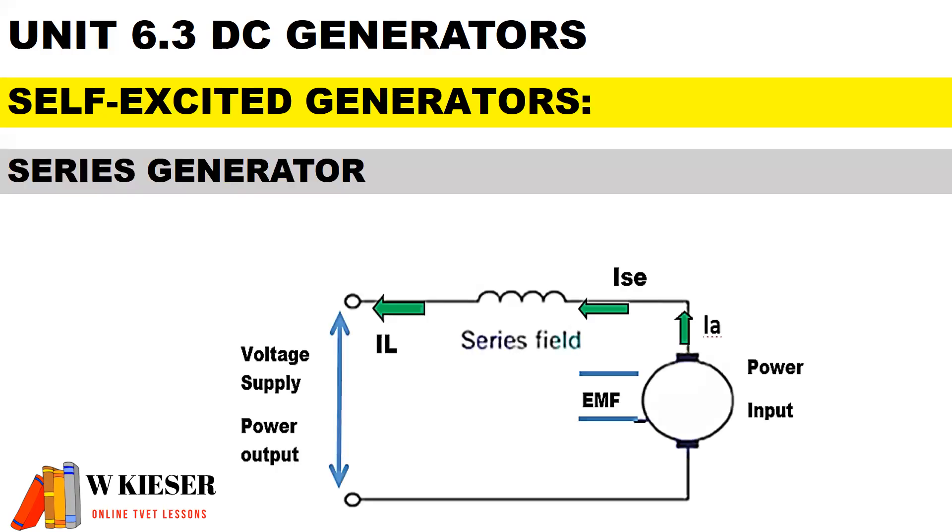For a series generator, we are producing armature current and therefore supplying electrical load. Current remains the same in a series circuit.